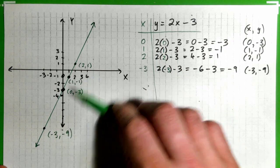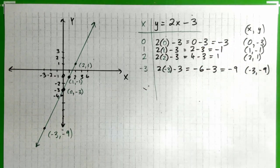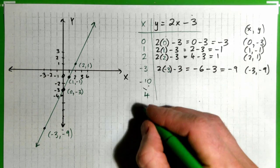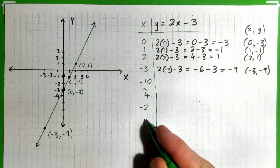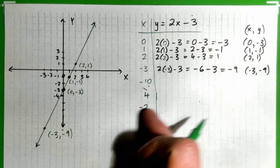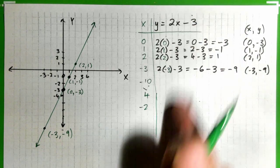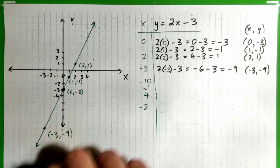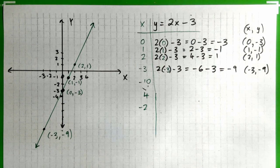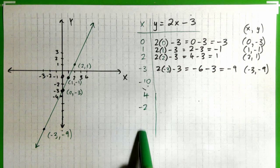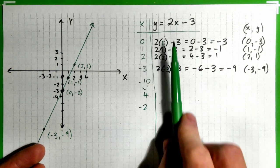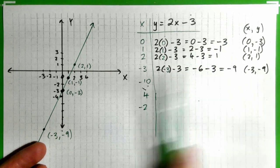To draw a straight line you only need 2 points, but it's nice to get at least 3 to check your work. You can plug in any x value — negative 10, 4, negative 2, it doesn't matter. You plug in x, calculate y, get a point, plot it, join the points with a line. That's it. Students always ask where the x numbers come from — we just made them up.